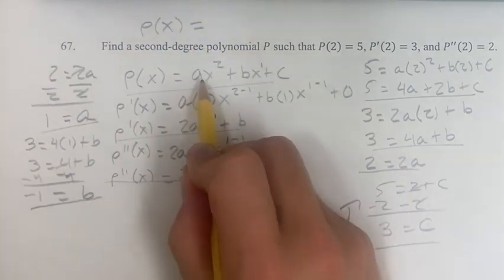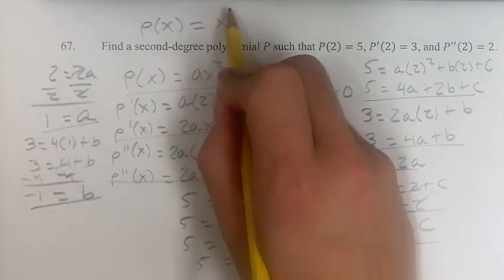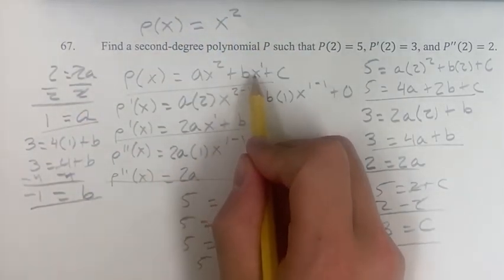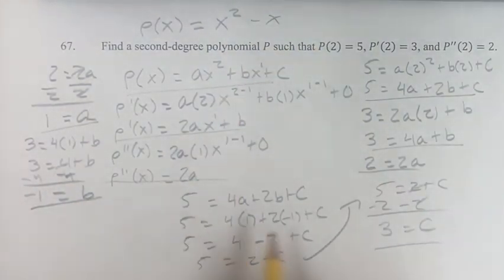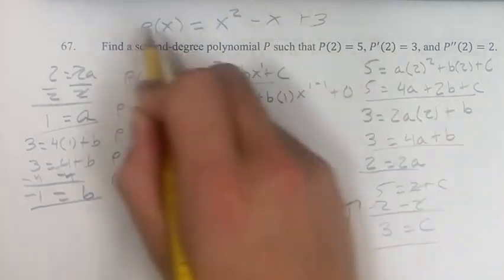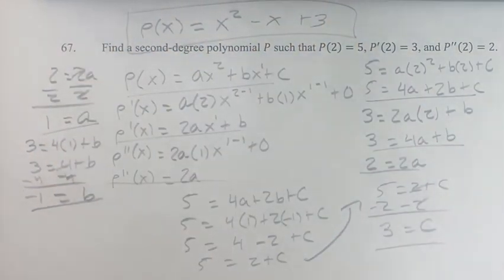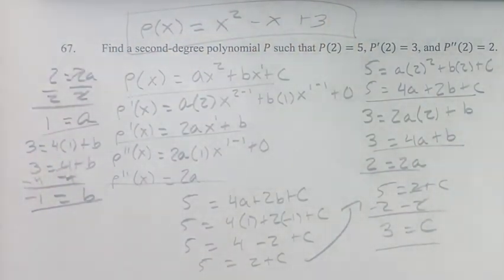So P of X is equal to AX squared, so 1X squared, so just X squared, plus BX would be minus 1X, so minus X, plus C would be plus 3. And that is the solution. As always, thank you for liking and subscribing, and I'll see you in the next video. Bye.